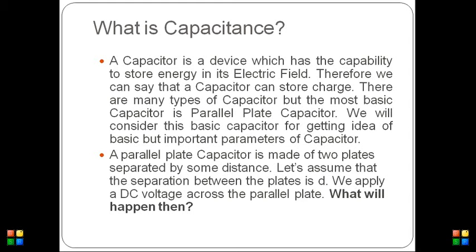A parallel plate capacitor is made up of two plates separated by some distance. Let's assume the distance of separation between the two plates is D. We are going to apply a DC voltage across the two plates of the capacitor.